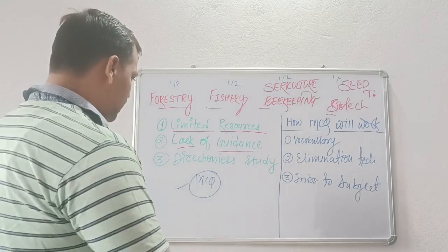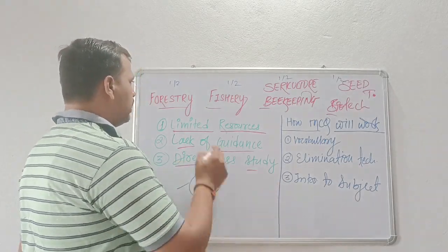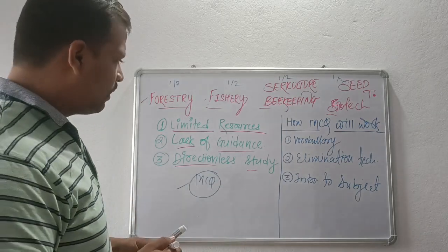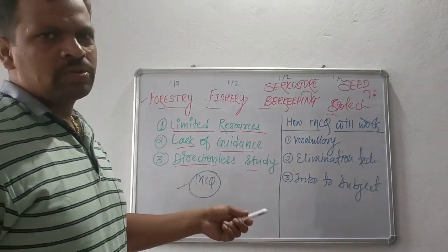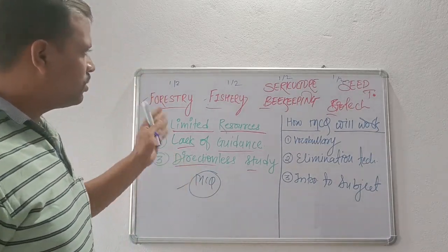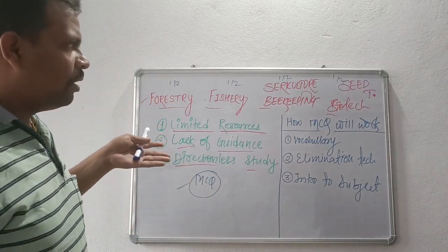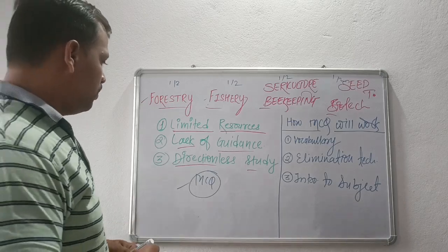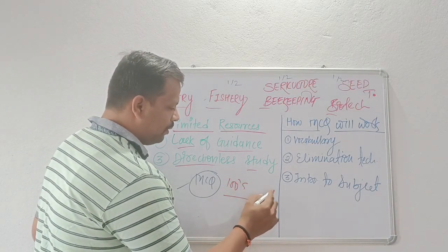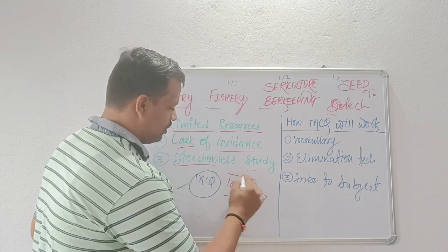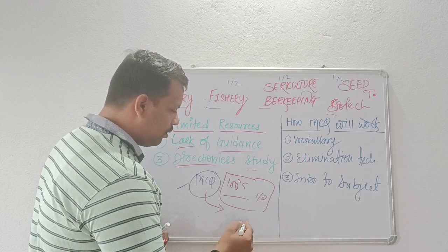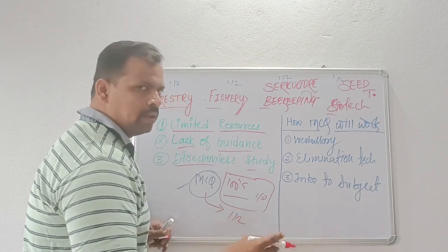The third point is directionless study. Many people take a huge textbook of these subjects and start reading it. It is worthless to study such voluminous books because they will not fetch good marks. You will read hundreds of pages but the outcome will be around 1 or 0 questions correct. But if you solve 100 MCQs, the chances are that you can get at least 1 or 2 questions right.